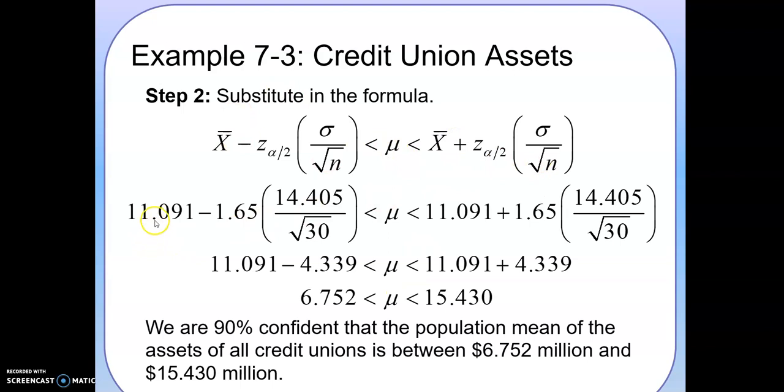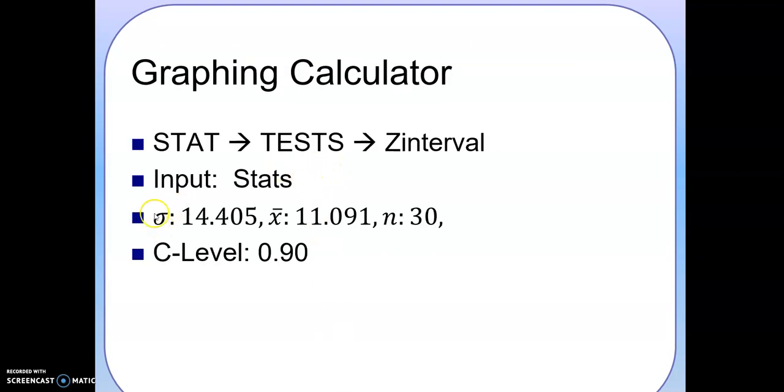Here's our formula again. We have the mean from the previous slide. We have 1.65 because 90% confidence gives you the Z of 1.65. The standard deviation was 14.405, and we have 30 credit union banks data. Once we plug it in, our overall average is somewhere between this and that. We're 90% confident that the population mean of the assets of all credit unions is somewhere between $6.752 million and $15.430 million. And that's how you find confidence intervals.